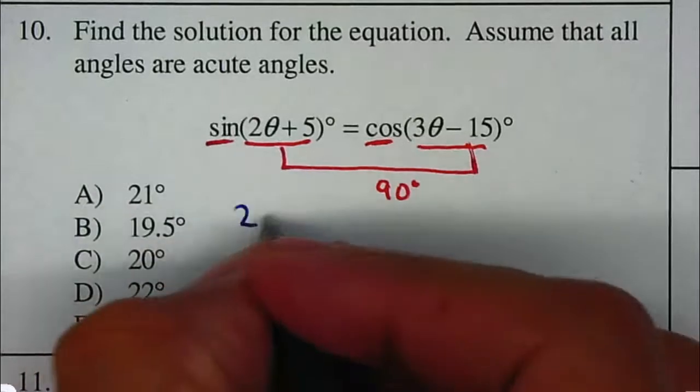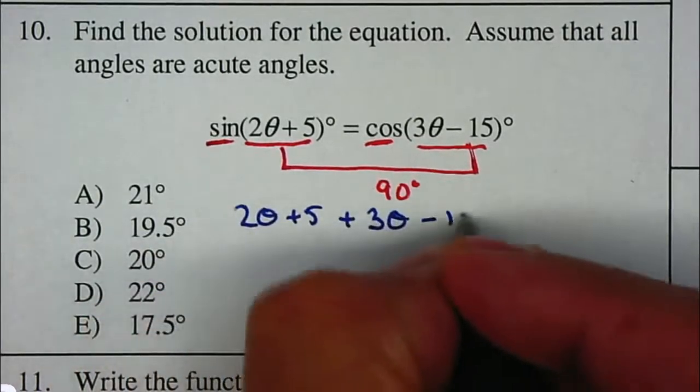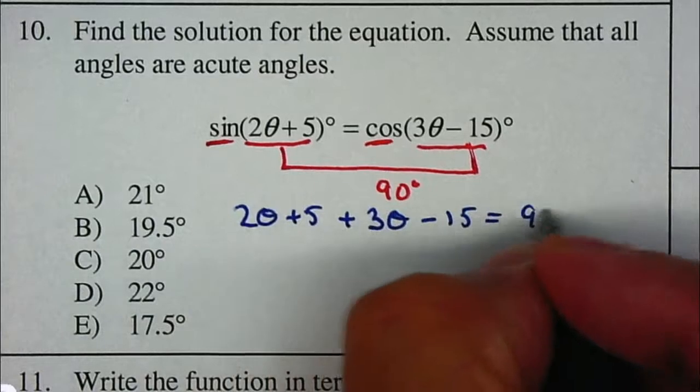So therefore if I add 2 theta plus 5 and 3 theta minus 15, that would be equal to 90 degrees.